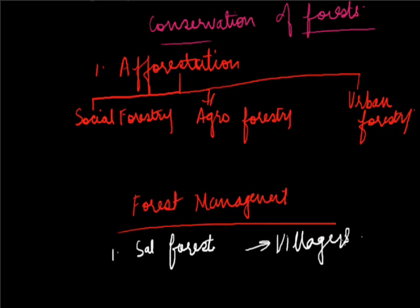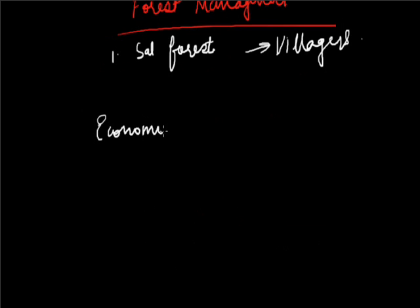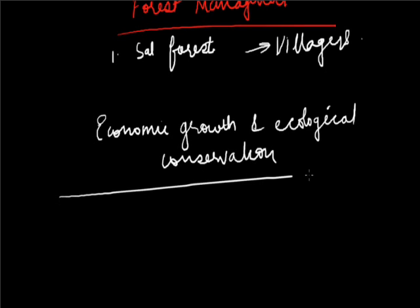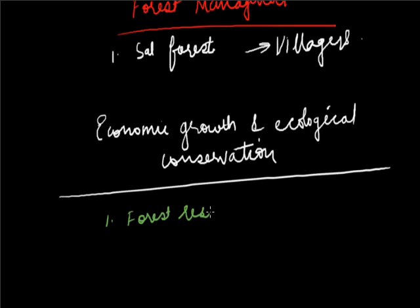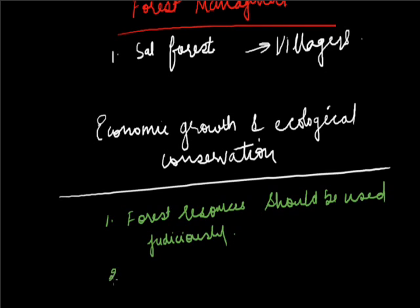Economic growth and ecological conservation: Forest resources should be used in an environmentally and developmentally sound manner, that is in a friendly manner. We can say forest resources should be used judiciously. If the exploitation is too high, economic and social development will be faster but environment will further deteriorate. We should use natural resources cautiously so that economic growth and ecological conservation go hand in hand.